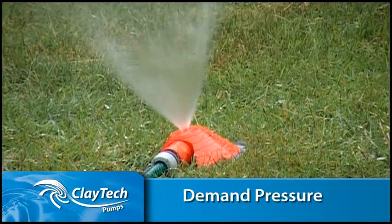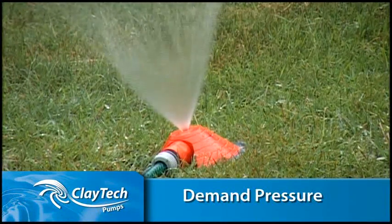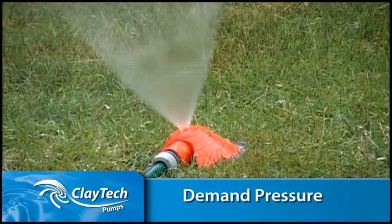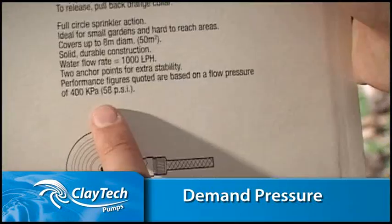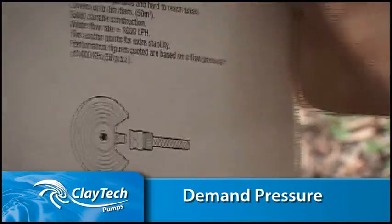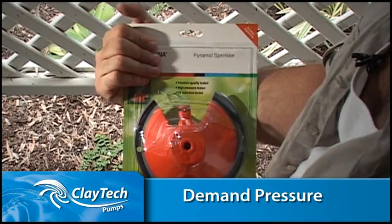The demand pressure is the pressure needed by an outlet, such as a sprinkler, to function properly. Without adequate demand pressure, your sprinkler will not work very well. The exact demand pressure required will usually be stated on the product packaging.